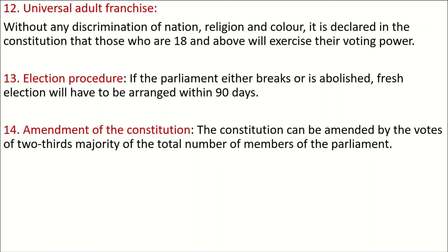Number thirteen: Election procedure — if the parliament either breaks or is abolished, fresh elections will have to be arranged within 90 days. Number fourteen: Amendment of the constitution — the constitution can be amended by a two-thirds majority vote of the total number of members of parliament. Since there are 350 members, if amendment is necessary on any articles, two-thirds of members must agree for the amendment to be done.